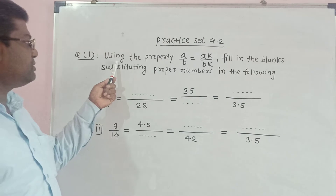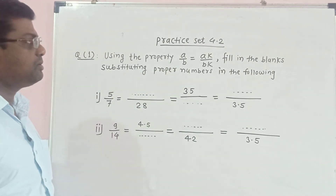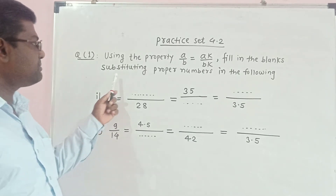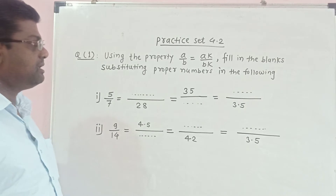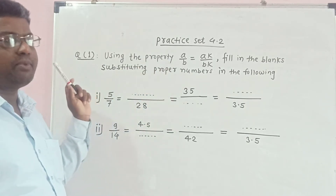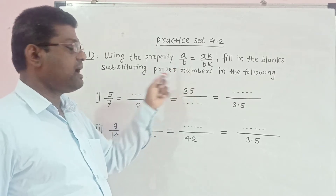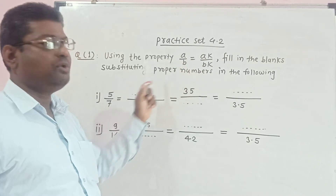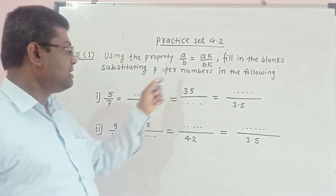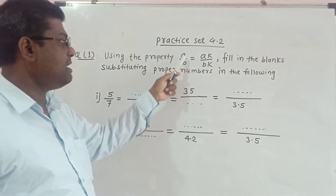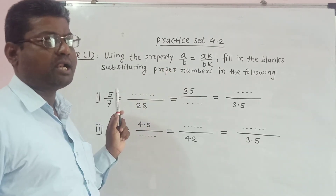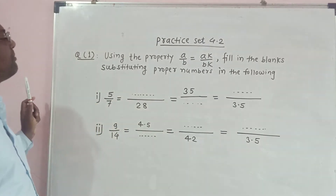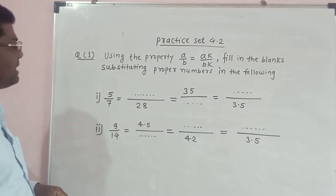Question number 1. Using the property A upon B is equal to AK upon BK, fill in the blanks substituting proper numbers in the following. If we multiply the numerator and denominator of a given ratio by the same number, then the value of the ratio remains unchanged. Or, if we divide the numerator and denominator of a given ratio, then the value of that ratio remains unchanged. By using this property, we have to solve these two examples.